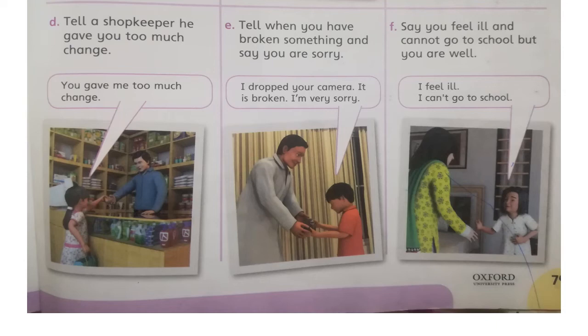Say you feel ill and cannot go to school, but you are well. The example is: 'I feel ill, I can't go to school.' It's up to you that you should honestly tell what you are feeling. So write here also whether it's an honest act or a dishonest act.